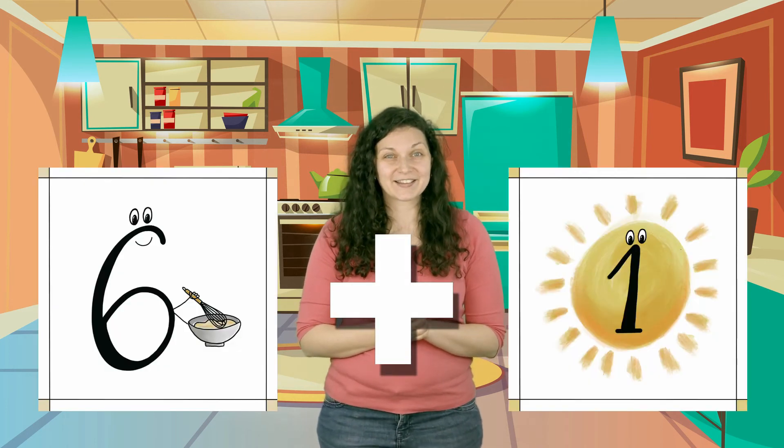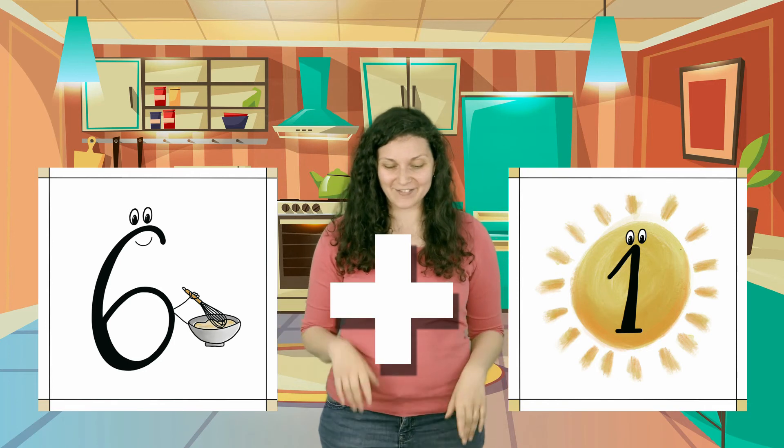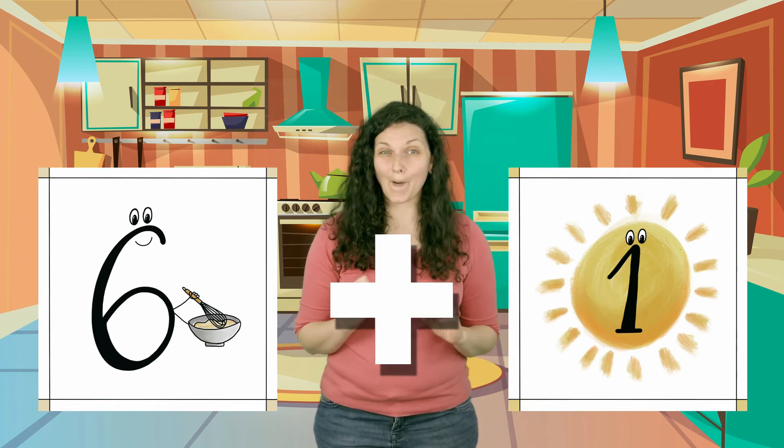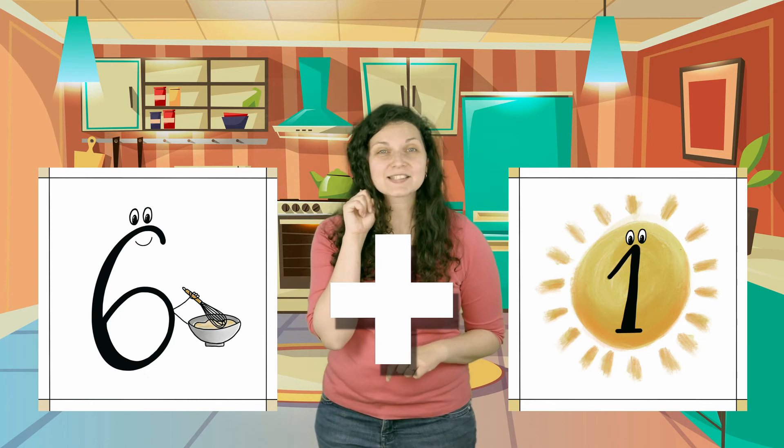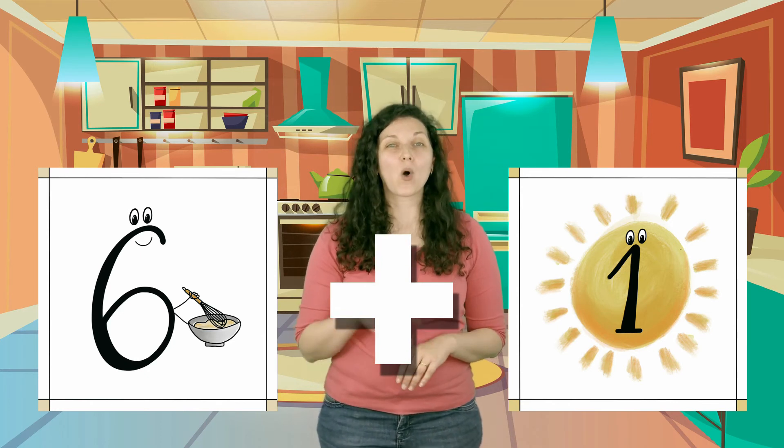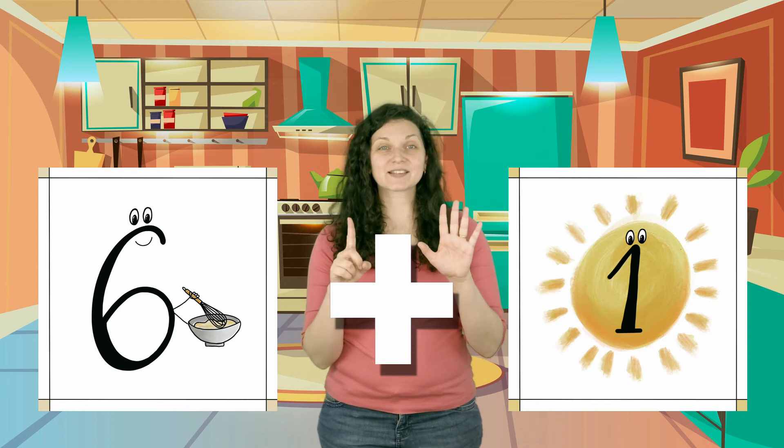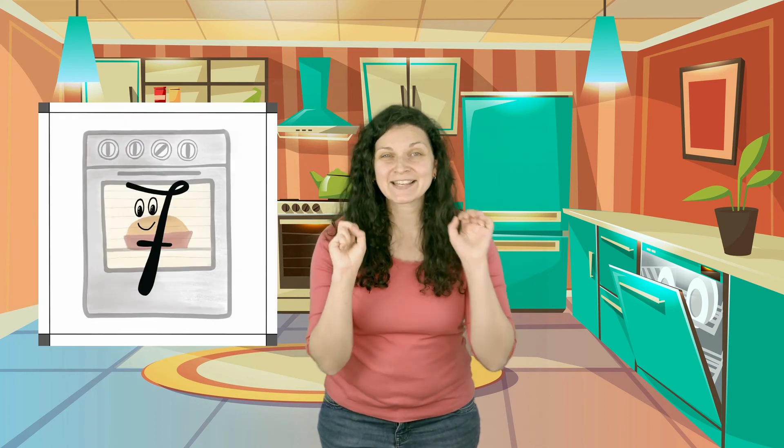Now that you can put the numbers together, we're going to do a little math — some additions, very easy. Can you tell me the result of this addition? We have six plus one. Seven! That's correct. Okay, next one.